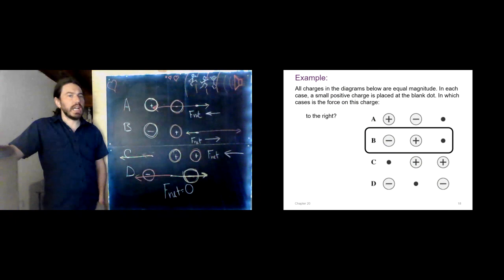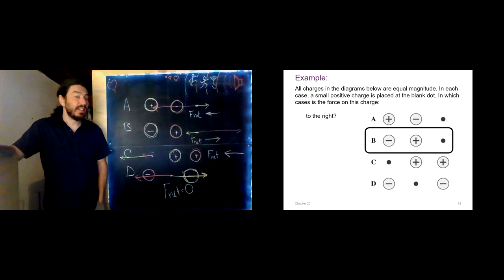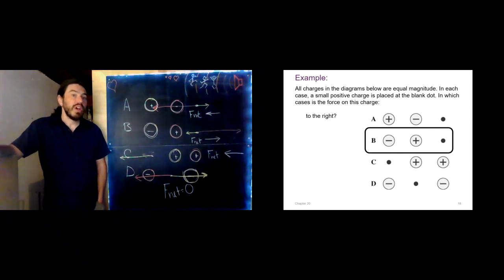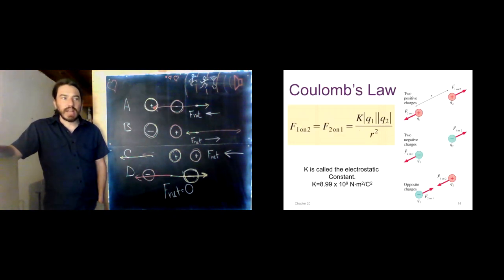This problem involves both the direction of force — remember, opposites attract, likes repel — and the magnitude. Even without calculating numbers, we use proportional thinking: an object twice as far away exerts one-quarter of the force.